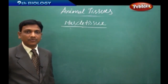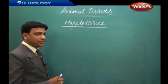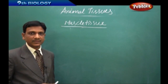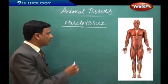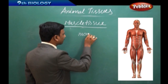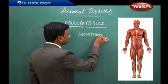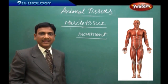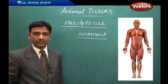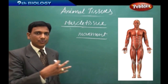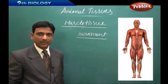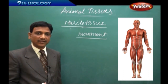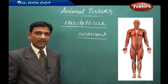Now we are going to discuss about muscle tissue. The main function of muscle tissue is to make movements in our body. Movements are needed for animals to get their food — the animal has to move from one place to another place in search of food, and it has legs and hands to enable that movement.